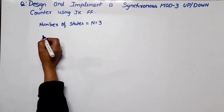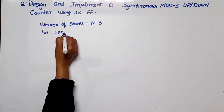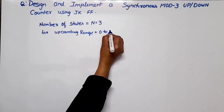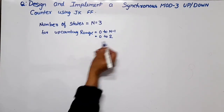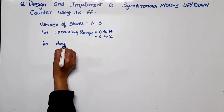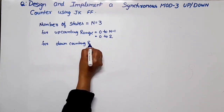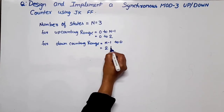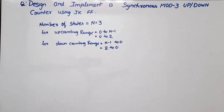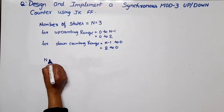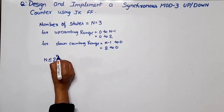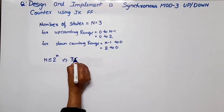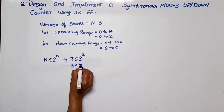It counts up and down both. For up counting, the range is equal to 0 to N minus 1, means 0 to 2. And for down counting, the range is equal to N minus 1 to 0, means 2 to 0. Now, how many flip-flops are required? We have to check the formula: N should be less than or equal to 2 raised to power n, where n is the number of flip-flops. If we put values, N is 3, less than or equal to 2 raised to power 2.